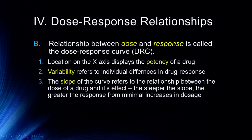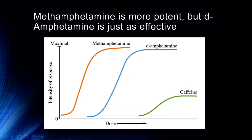The slope of the curve refers to the relationship between the dose of the drug and its effect. The steeper the slope, the greater the response from minimal increases in dosage. We can see that methamphetamine and dextroamphetamine have fairly similar slopes, while caffeine has a fairly gentle slope — it requires much greater increases in dosage to get even a minimal effect. Whereas a small increase in dosage will dramatically increase the effect of methamphetamine and dextroamphetamine.